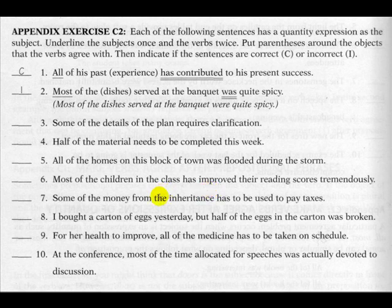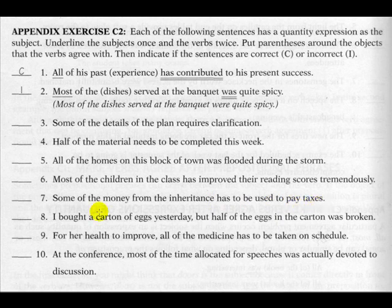Number seven: Some is the quantity expression and the subject; money is the object, which determines the verb. Money is singular and 'has' is singular — this sentence is correct. 'Some of the money from the inheritance has to be used to pay taxes.'